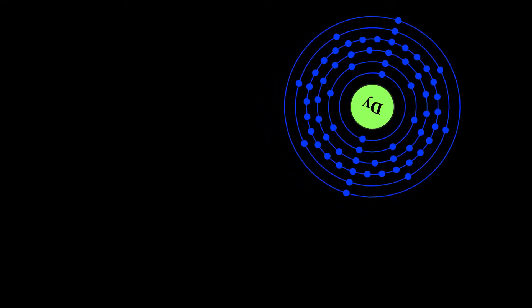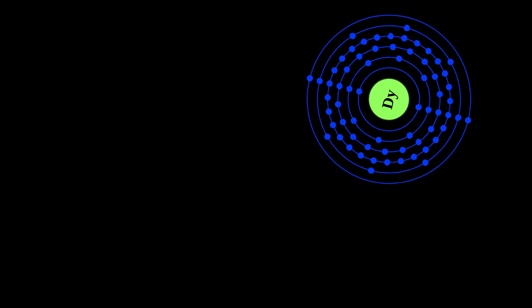Naturally occurring dysprosium is composed of seven isotopes, the most abundant of which is 164 Dy.